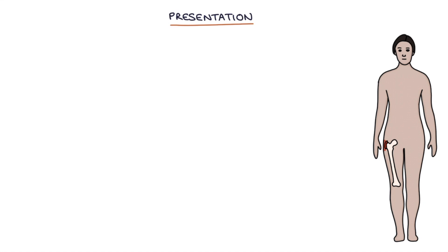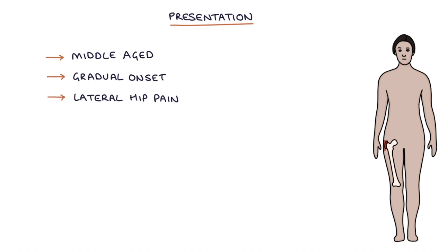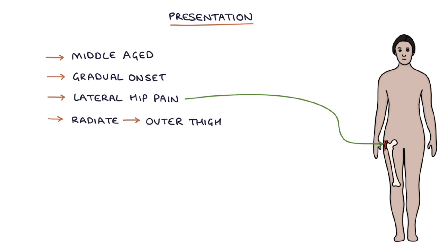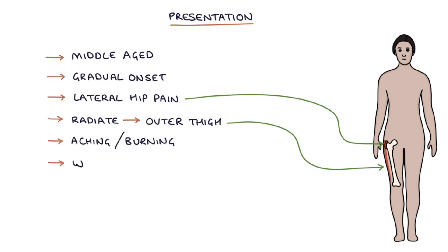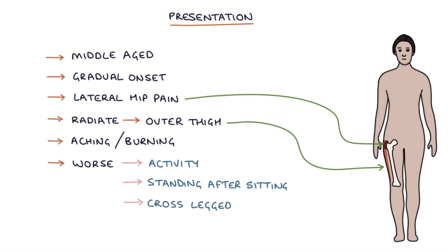Let's talk about the presentation of trochanteric bursitis. The typical presentation is a middle-aged patient with gradual onset lateral hip pain over the greater trochanter on the outside of the hip, and this pain may radiate down the outer thigh. The pain is described as aching or burning and can be worse with activity, standing after sitting for a prolonged period, or trying to sit cross-legged. The pain may disrupt sleep and it can be difficult to find a comfortable lying position.